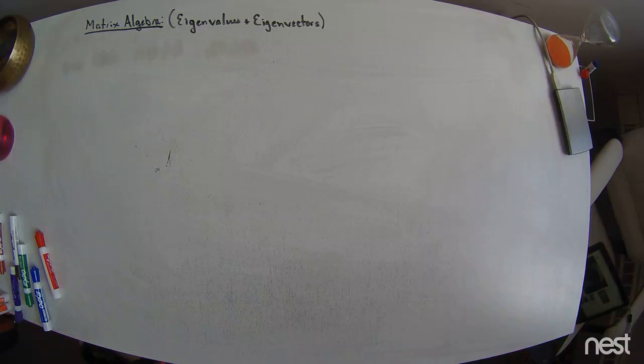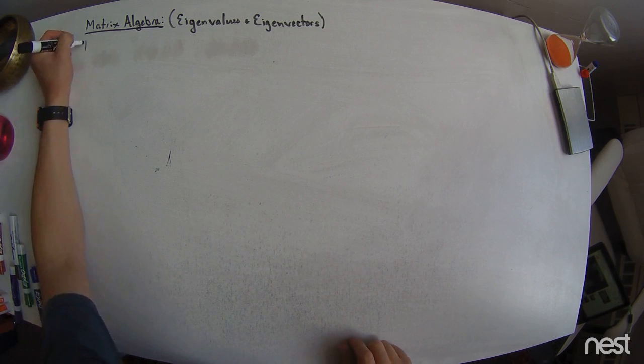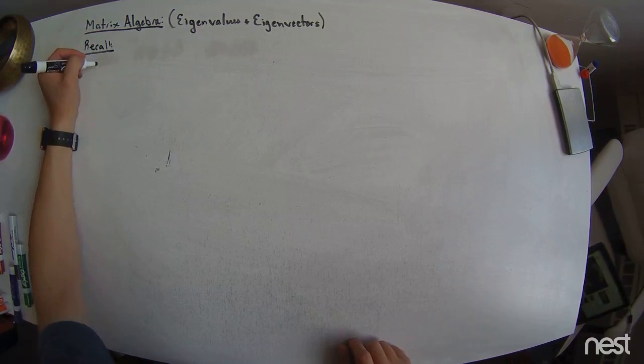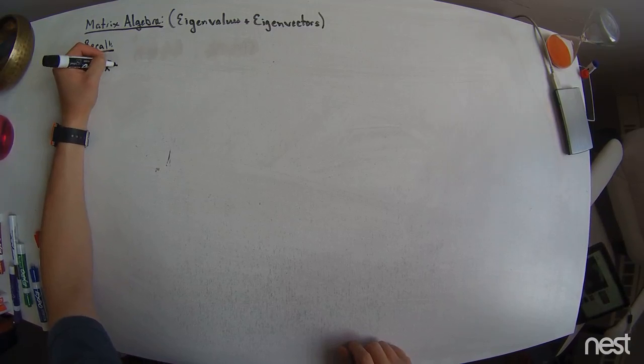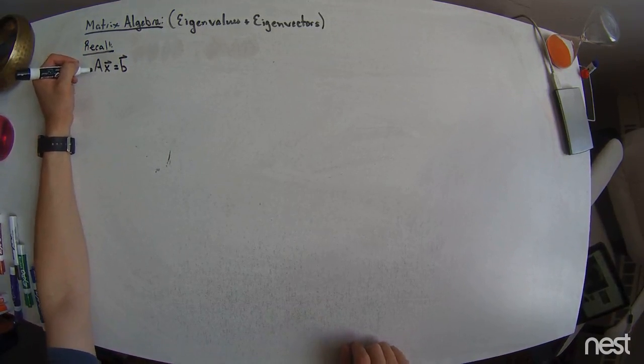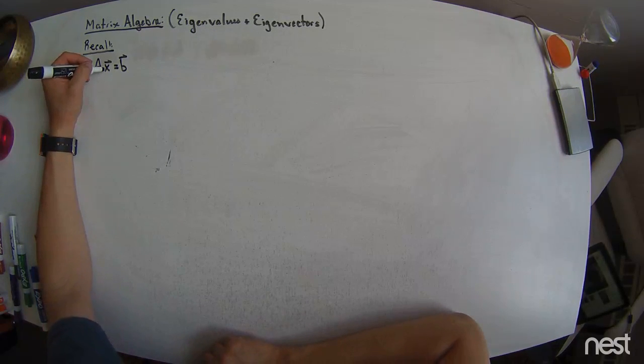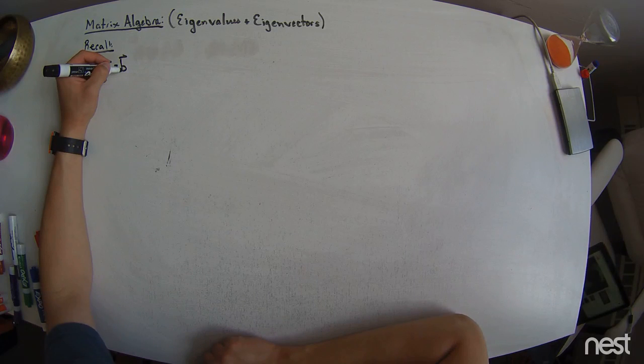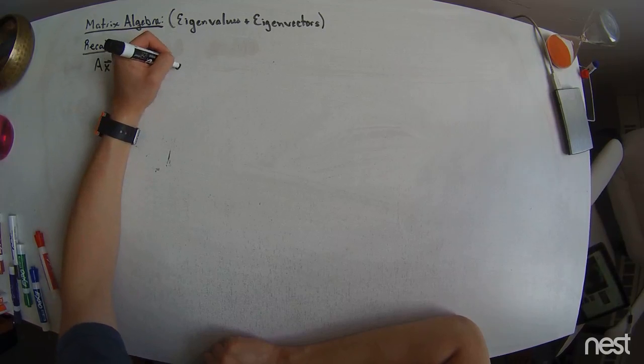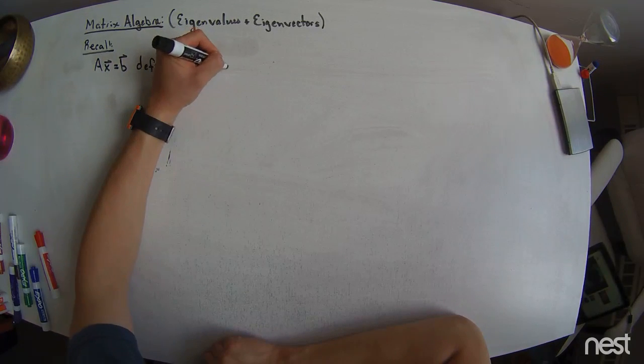All right, so for our last talk here, we're going to talk about eigenvalues and eigenvectors, which is going to be the fundamental problem that we look at through the back end of the course. We want to recall that A times X is equal to B, where A is a matrix of n rows and n columns, and X is a vector of n many rows, and B is a vector of n many rows, defines a linear system.